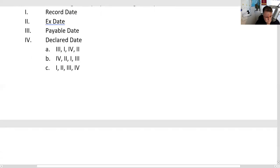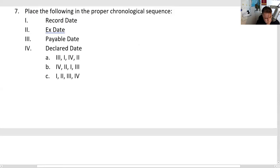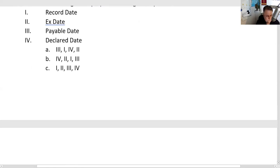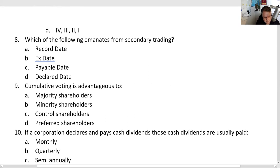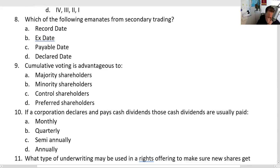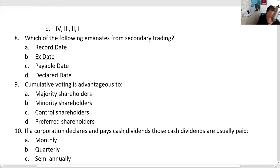The sequence is declared, ex, record, payable. The ex-date emanates from the record date — the board sets the record date, and the ex-date follows from that. Looking at the sequence, the answer is B. The x-date comes from secondary trading — one business day back from the record date set by the board. The answer to this question is B, as in boy.